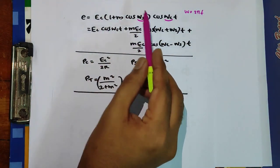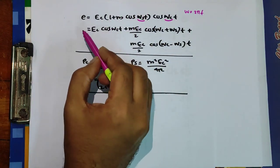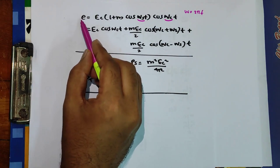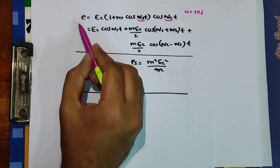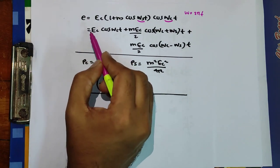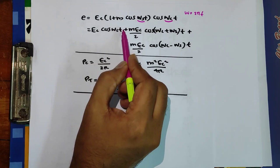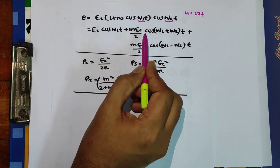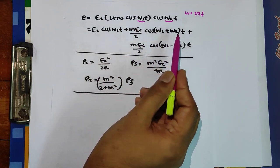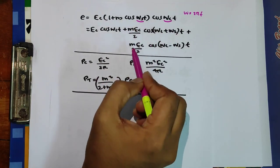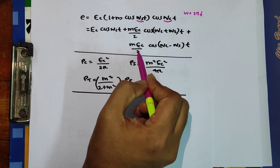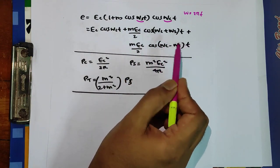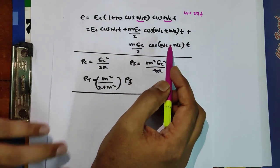Simplifying that, we get the instantaneous voltage equal to Ec·cos(ωc·t) plus (mEc/2)·cos((ωc + ωs)t) plus (mEc/2)·cos((ωc − ωs)t).